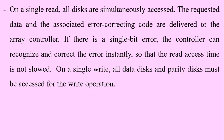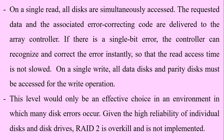Although RAID level 2 requires fewer disks than RAID level 1, it is still rather costly — the number of redundant disks is proportional to the log of the number of data disks. On a single read, all disks are simultaneously accessed and the requested data and associated error-correcting code are delivered to the array controller. If there is a single-bit error, the controller can recognize and correct the error instantly. On a write, all data disks and any parity disks must be accessed. This level would only be an effective choice in an environment in which many disk errors occur. Given the high reliability of individual disks today, RAID level 2 is overkill and is not implemented.